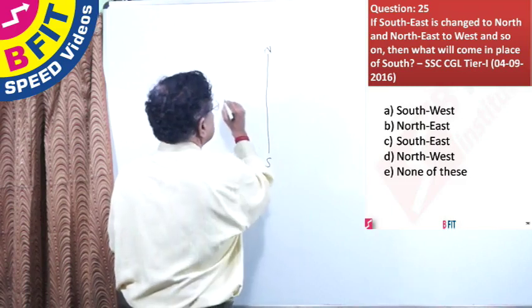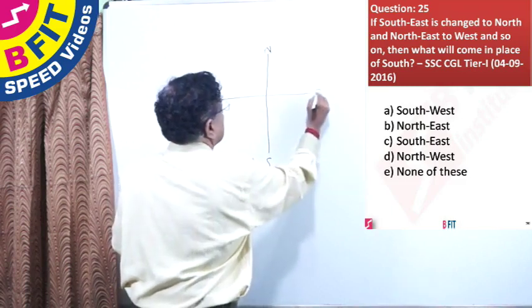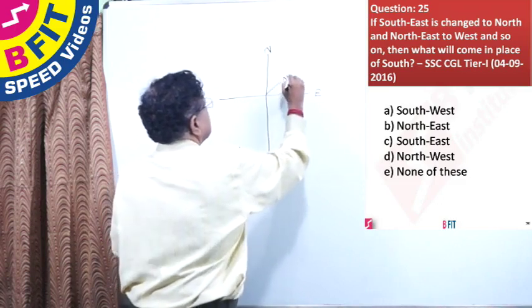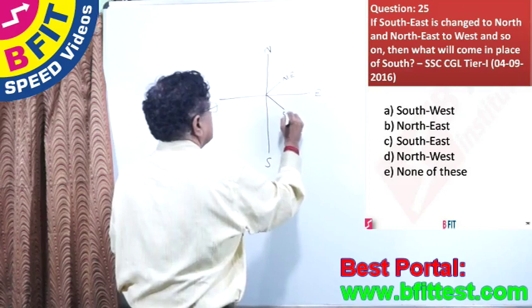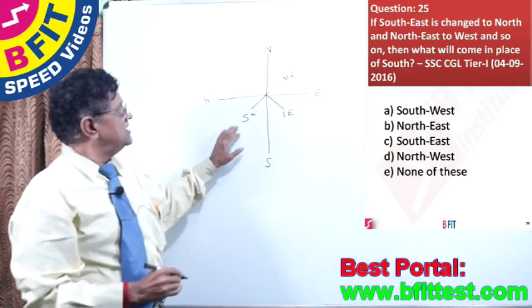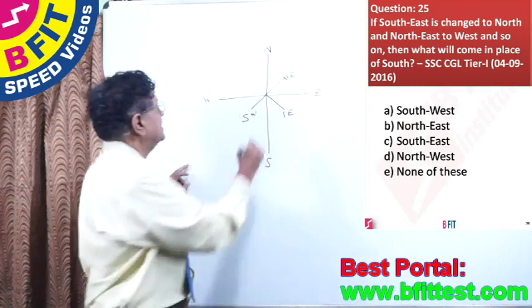North, South, East, West. This is North-East, South-East, this is South-West and this is North-West.